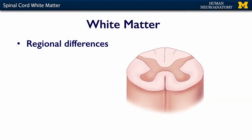There are going to be regional differences. Obviously, the fibers that are going to innervate your upper arm are not going to be seen in the lumbar portion of the cord. But for the most part, most of your tracts are going to be present at most levels of the cord, though there are some regional differences.